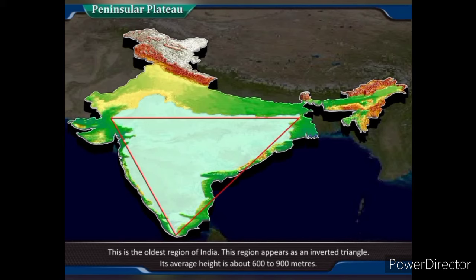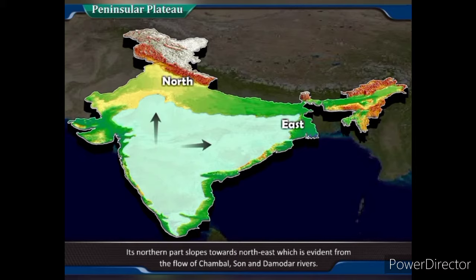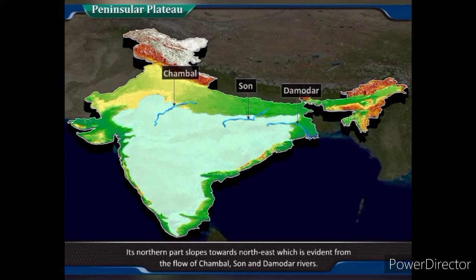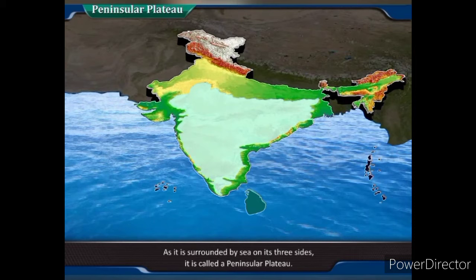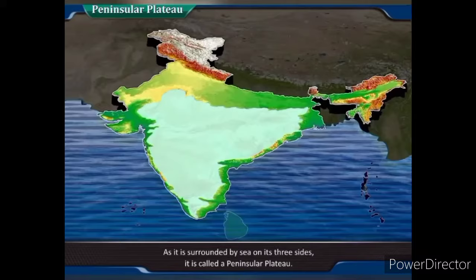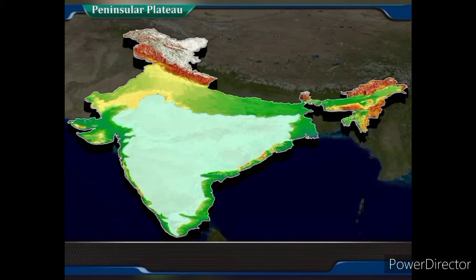Peninsular Plateau: This is the oldest region of India and appears as an inverted triangle. Its average height is about 600 to 900 meters. Its northern part slopes towards the northeast, which is evident from the flow of the Chambal, Son and Damodar rivers, while the southern part slopes towards the southeast. As it is surrounded by sea on three sides, it is called a Peninsular Plateau, and it is also called the Southern Plateau. The Peninsular Plateau can be divided into two parts: 1. Malwa Plateau and 2. Deccan Plateau.